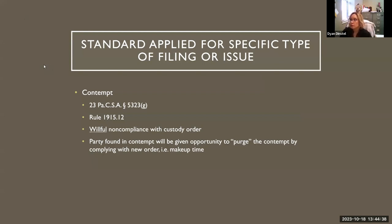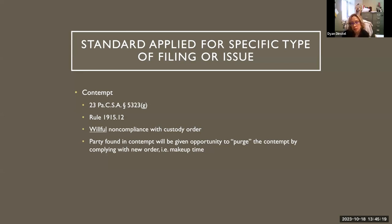For contempt, what the petitioner needs to show is that there has been willful noncompliance with the custody order. If they want to file for contempt because the other party did not bring the child to the exchange location for the client's visit last week, it is important to know why — and sometimes you can't know why, so you can absolutely file for contempt and make the other side prove they couldn't get there for some reason.